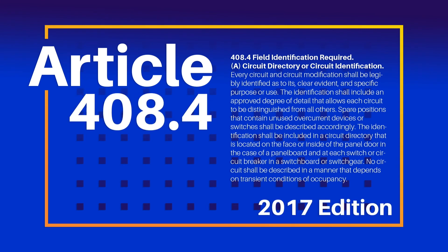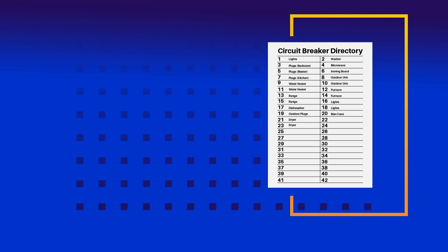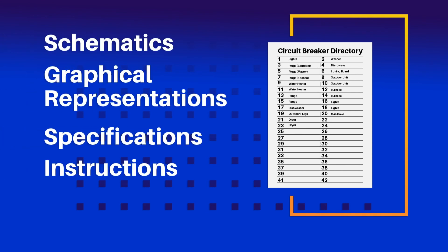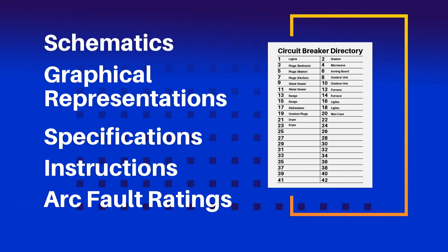These provisions satisfied the requirement of being easy to locate, but didn't provide as much detail as might be needed. Because most installers rely on pre-printed templates, the problem was always that they only gave enough room for a few words. Lists left no space for other important information, like schematics or specs, to say nothing of arc fault ratings, lists of circuits controlled by energy management systems, and inspection stickers.